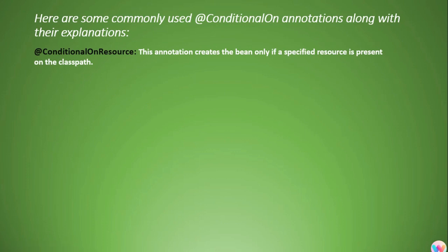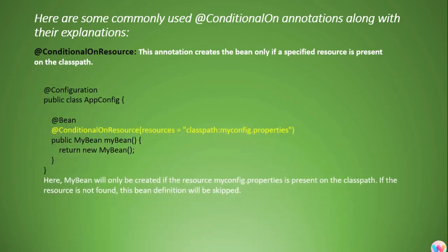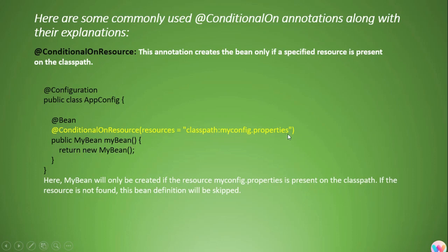The next case is @ConditionalOnResource — this annotation creates the bean only if a specified resource is present on the classpath. For example, if myconfig.properties is present on the classpath, then only the bean should be created. Similarly, suppose you have a database.properties file and a bean used to set up database connections — you can say: if database.properties is present, then only create this bean. If the resource is not found, the bean will be skipped.